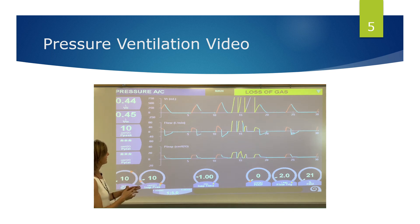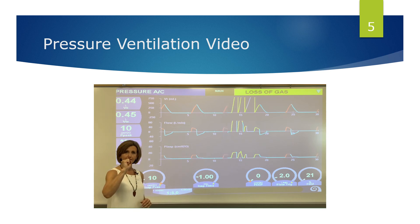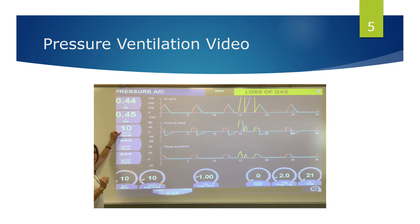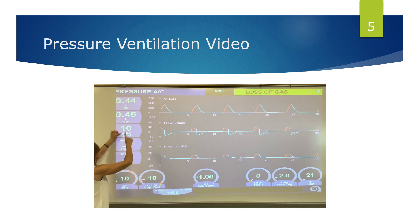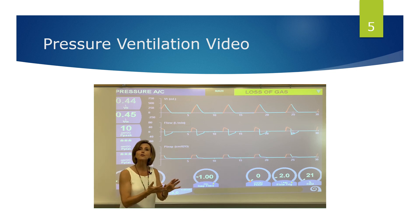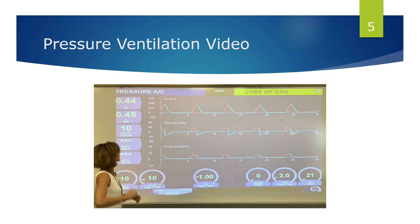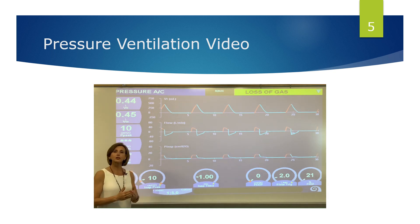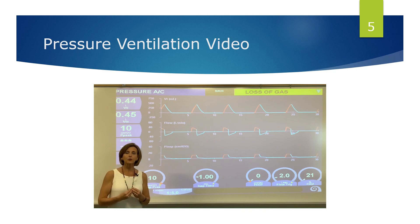With the bronchospasm simulated, you can see we're still delivering the same pressure — the pressure is the same — but tidal volume has decreased. The ventilator only pushes that set pressure, and for that pressure, not as much volume is being moved into the lungs because the airway is smaller.